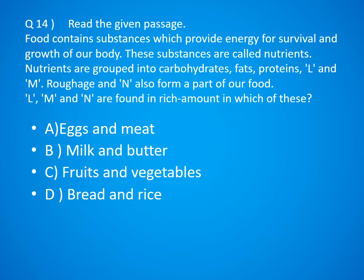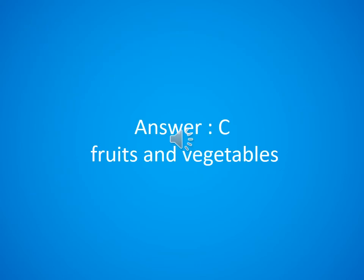Question 14. Read the given passage: Food contains substances which provide energy for survival and growth of our body. These substances are called nutrients. Nutrients are grouped into carbohydrates, fats, proteins, L and M. Roughage and N are also part of our food. L, M and N are found in rich amounts in which of these? A. Eggs and meat, B. Milk and Water, C. Fruits and Vegetables, D. Bread and Rice. The answer is C. Fruits and Vegetables.